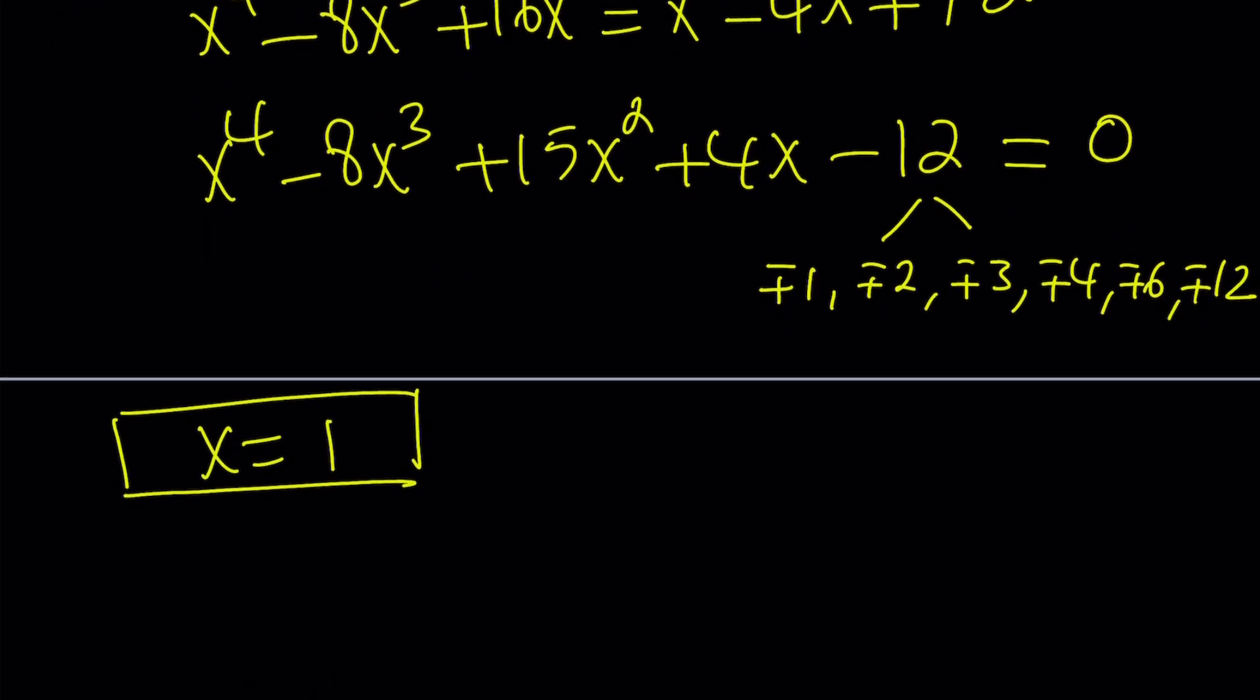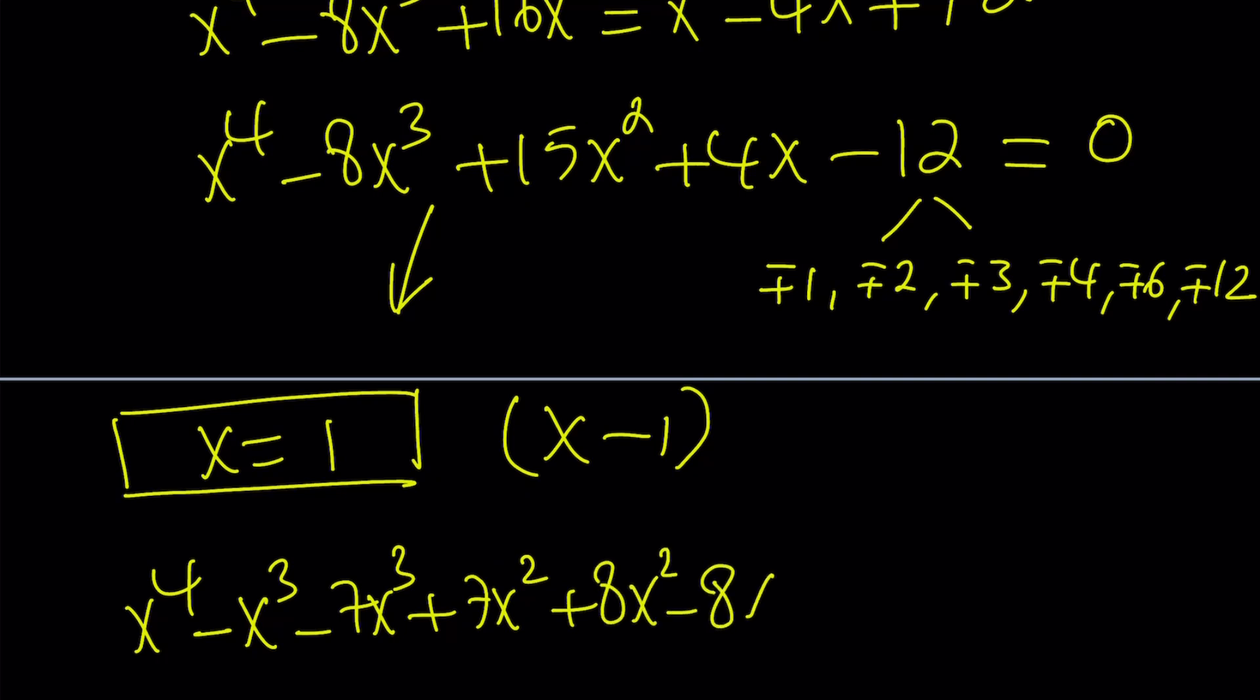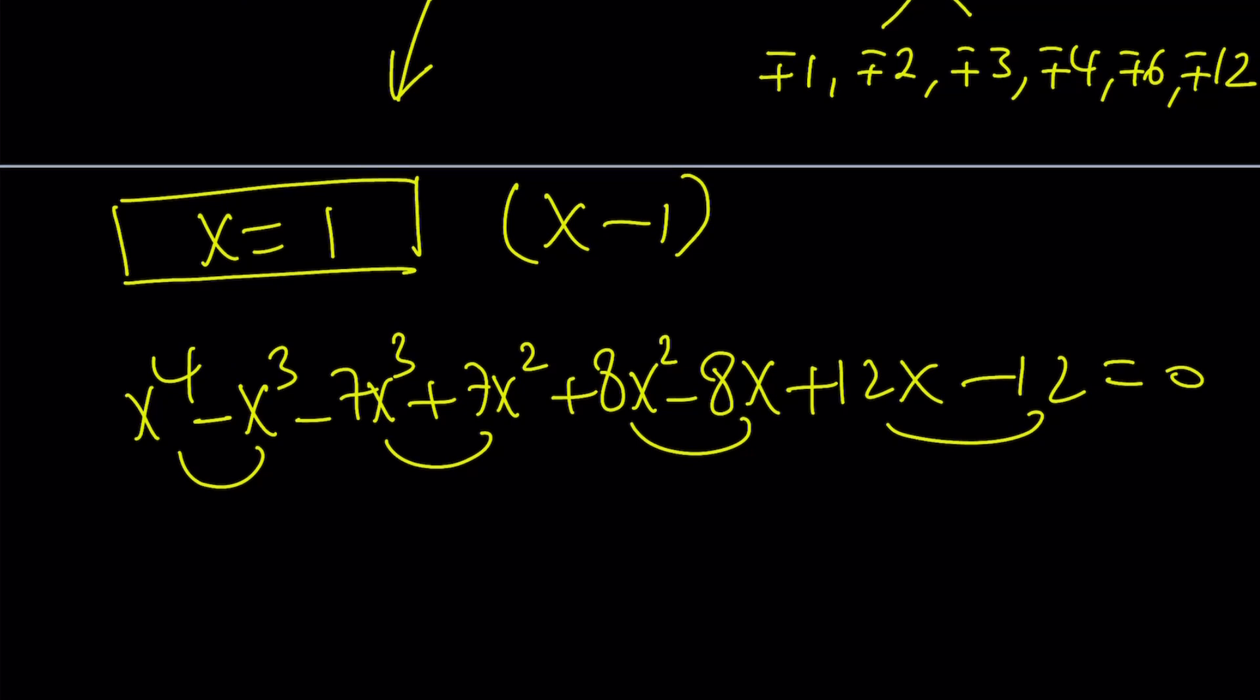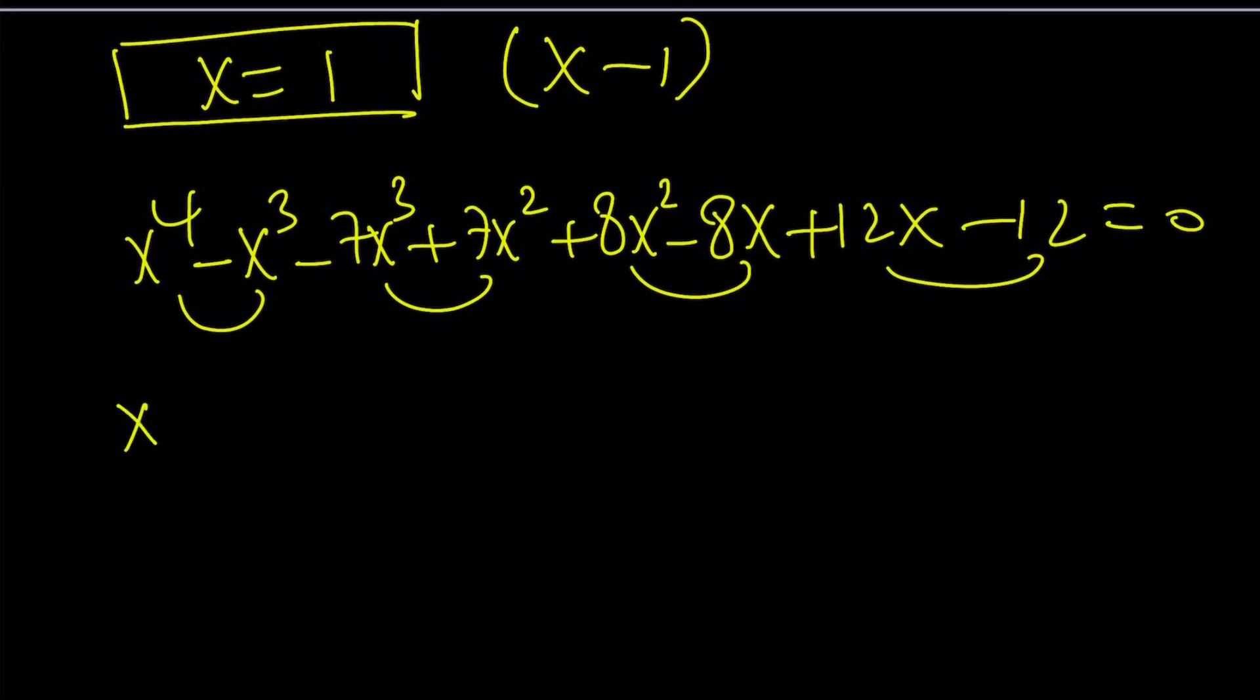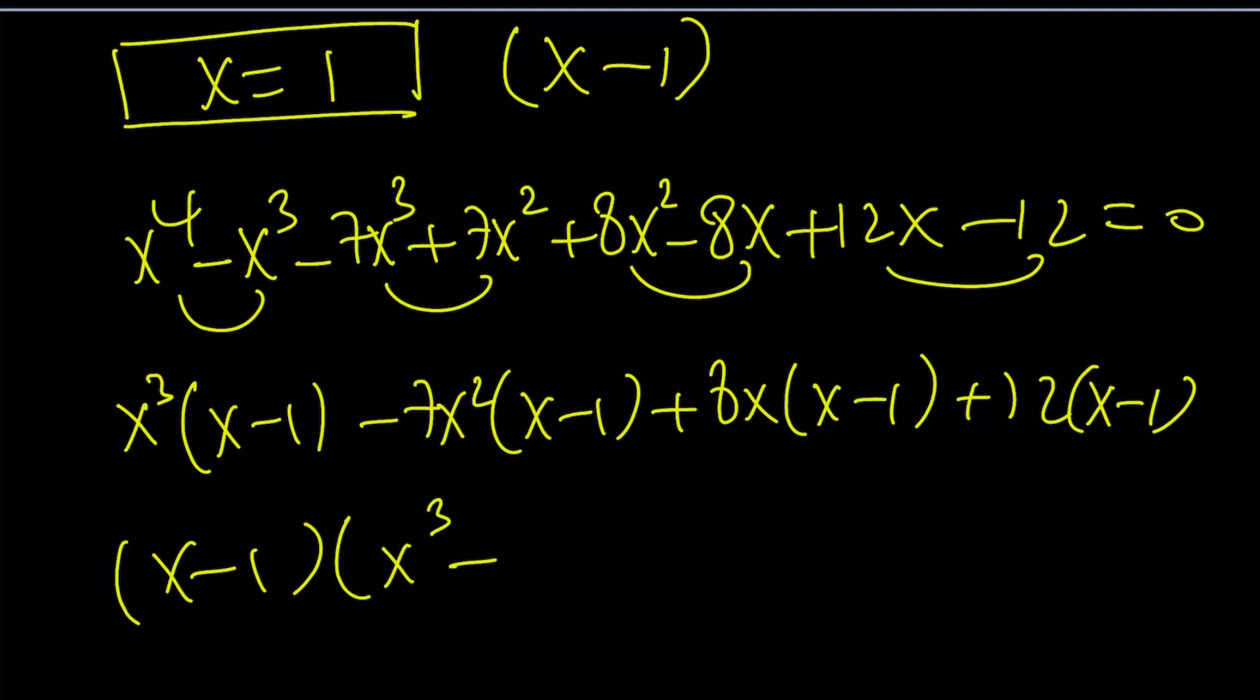So x equals 1 is a solution. How do we proceed? We could go ahead and divide this by x minus 1 by factor theorem. Or you could just arrange it like this: x to the 4th minus x cubed minus 7x cubed plus 7x squared plus 8x squared minus 8x plus 12x minus 12. Because I know some folks don't like this idea, but I really like breaking it down like this because this emphasizes the fact that x minus 1 is a factor and also makes factoring a little easier. It's much better than long division, trust me, or synthetic division. Anyways, x cubed times x minus 1 minus 7x squared times x minus 1 plus 8x times x minus 1 plus 12 times x minus 1. And then x minus 1 out, we get x cubed minus 7x squared plus 8x plus 12, whole thing equals 0.